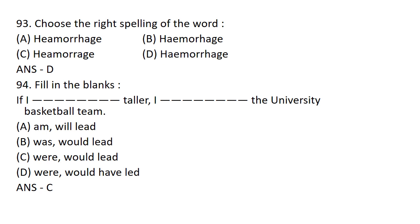Fill in the blanks: If I dash taller, I dash the university basketball team. Option C: WERE / WOULD LEAD. If I WERE taller, I WOULD LEAD the university basketball team. Option C is the correct answer.